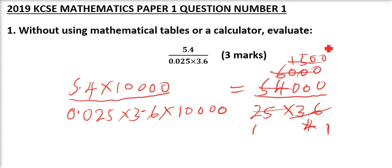So here you'll be able to get 60. So our answer, our final answer is equals to 60. So that is how you work out that question and you get yourself 3 marks.